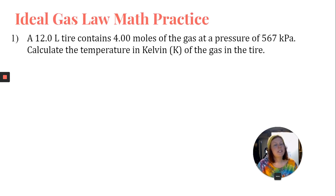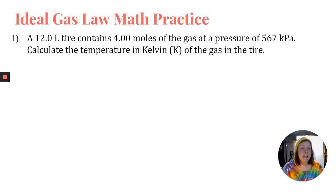Anyway, so let's go ahead and do some practice from our own worksheet. This right here is number one on our practice worksheet. It says a 12-liter tire contains four moles of the gas at pressure of 567 kilopascals. Calculate the temperature in Kelvin of the gas in the tire. So we've got 12 liters, which is volume. We got four moles, which is moles. We've got 567 kilopascals, which is pressure, and we're trying to calculate the temperature in Kelvin.